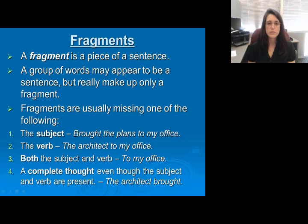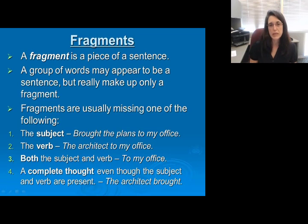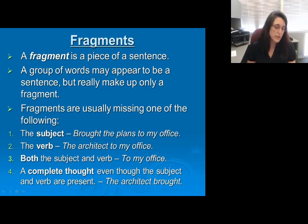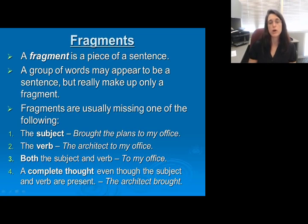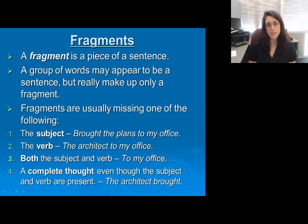The hardest to pin down is the missing complete thought, because a lot of times we think when something goes together it is a complete thought. However, a sentence must have the subject, the verb, and the complete thought. The example here is 'the architect brought.' Typically in a simple sentence, 'she swam' or 'I ran' are complete sentences — a subject and a verb with a complete thought. But in this case the verb requires an object; it needs a receiver for what's being brought. So this is a fragment — it's missing the complete thought.